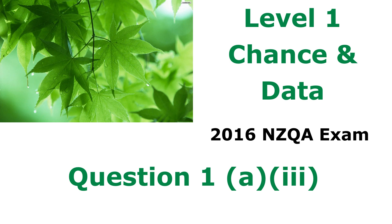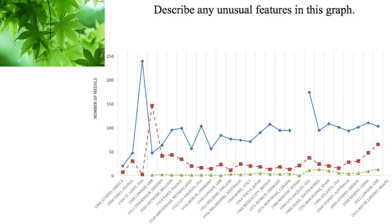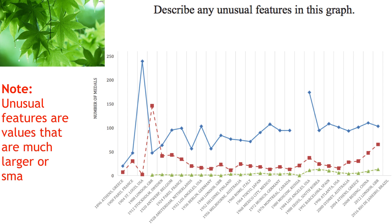Here is question 1a part 3. The question asks us to describe any unusual features in our graph. When we talk about unusual features, they're values that are a lot larger or smaller than we would expect.